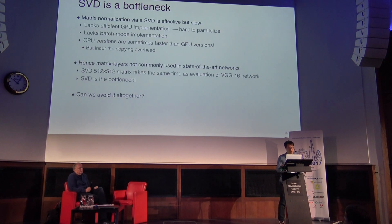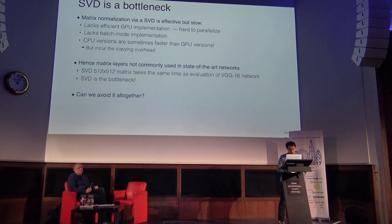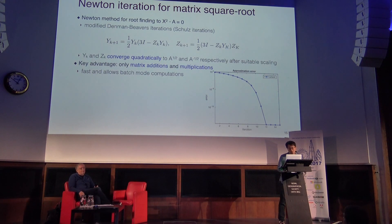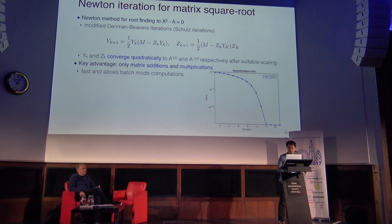However, singular value decomposition is slow because it lacks GPU implementation and also does not support batch mode computation, meaning you have to write a for-loop over every matrix in your batch. Empirically, we found that computing SVD on a 512×512 matrix takes the same time as a full forward pass through a VGG16 network, so it is a bottleneck. For the particular case of matrix square root, we can approximate the output by Newton's method. The matrix square root satisfies X² − A = 0, so we use Newton's iteration for root finding. One such iteration is a modified Denman–Beavers iteration, where Y_k and Z_k converge quadratically to the square root of A and the inverse square root of A respectively.